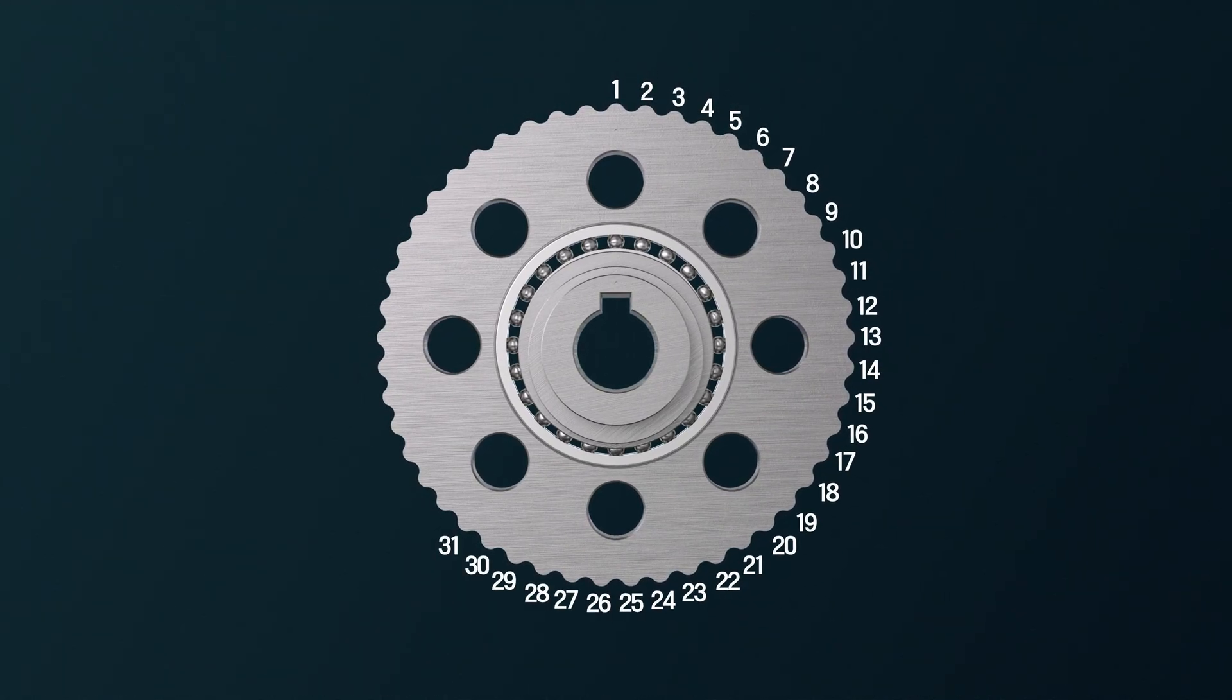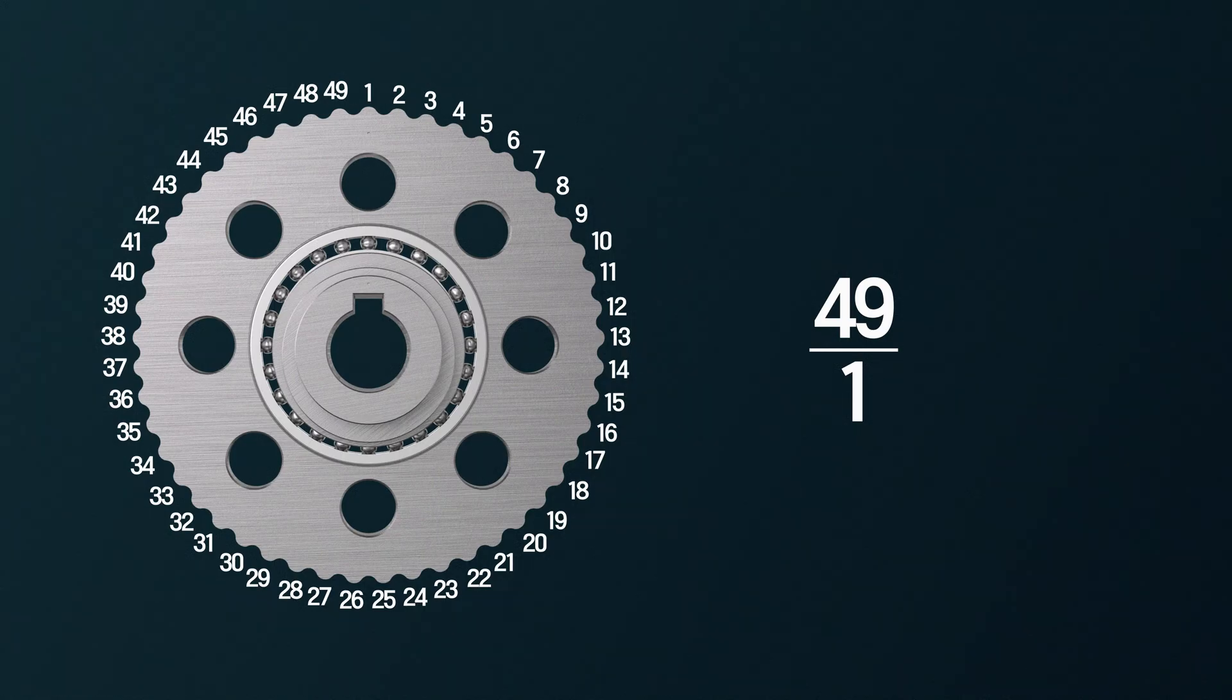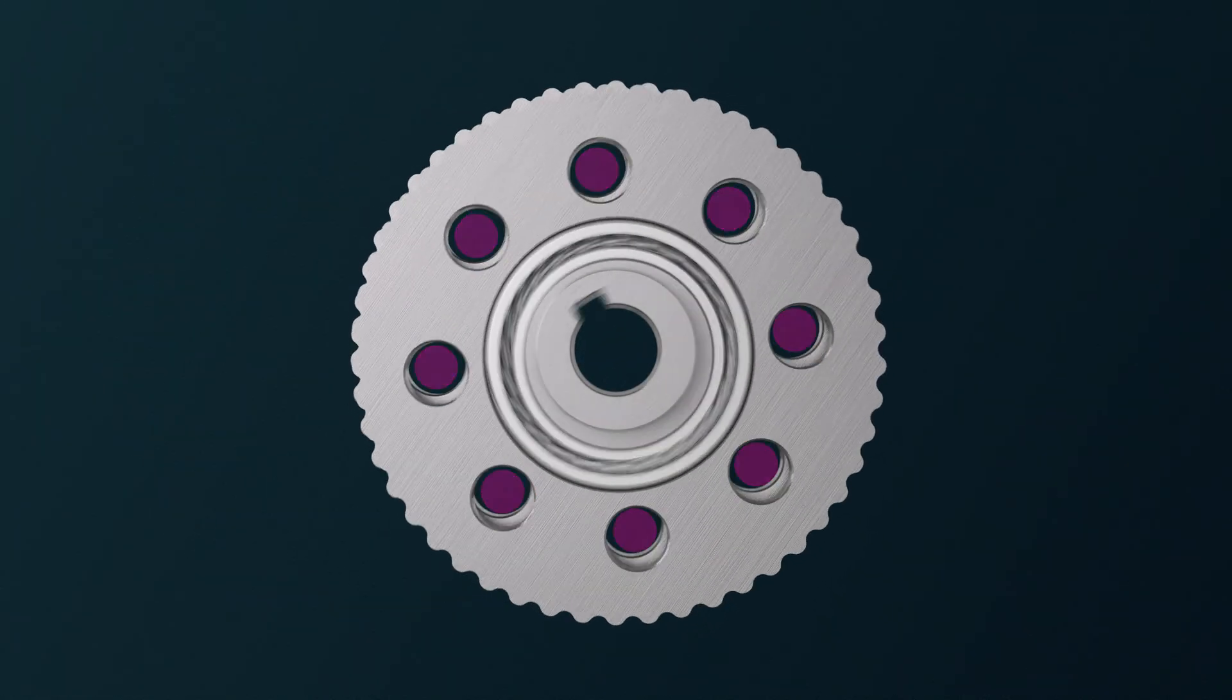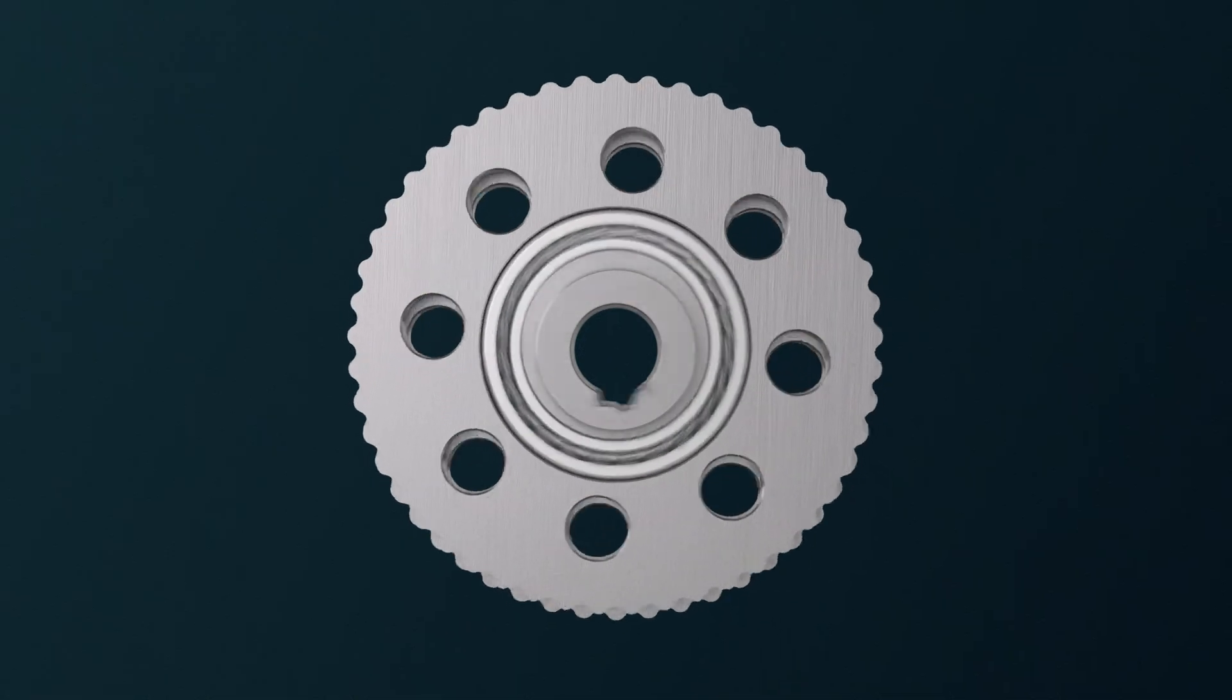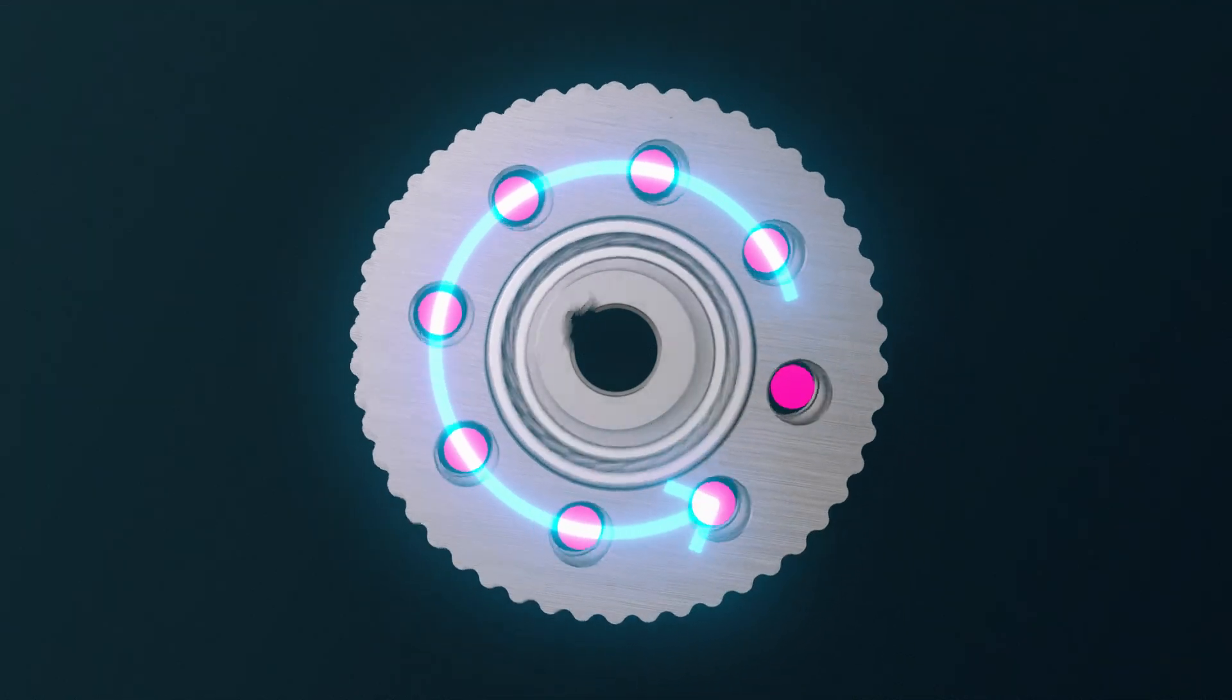Now, take a close look at the number of lobes on the disc. This tells us the gear ratio of the system. These openings in the disc are where the output pins go. Once the pins are in place, the system produces its final output motion.